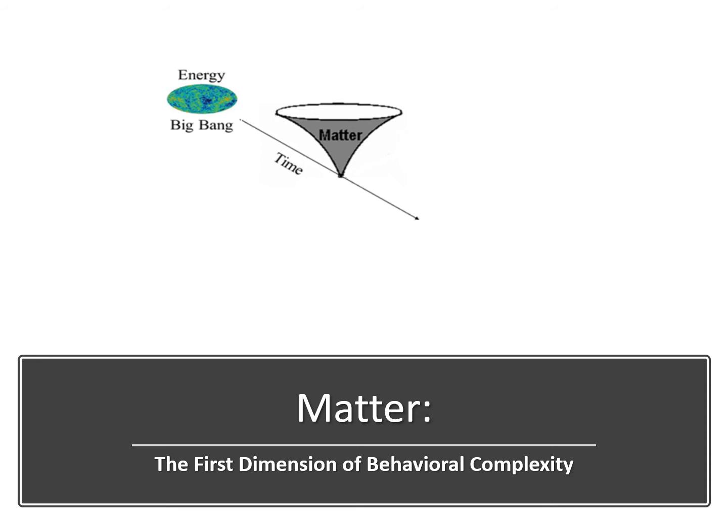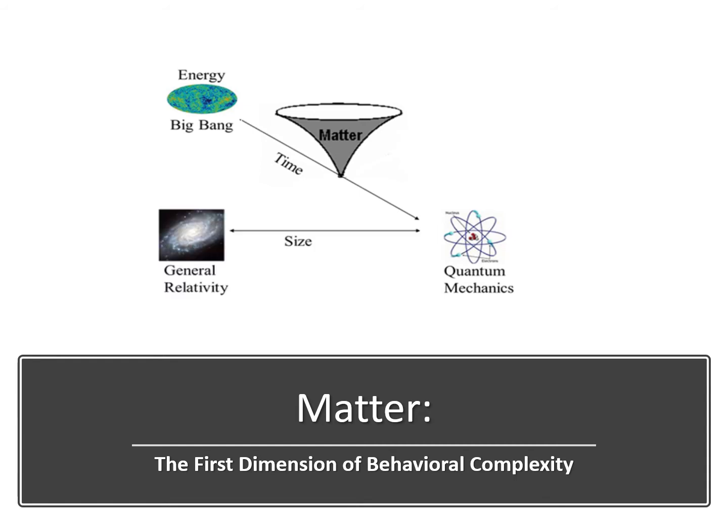In physics, matter is an entity that occupies space and has a rest mass. On the TOK, Matter with a capital M refers to the first dimension of behavioral complexity. A dimension of behavioral complexity can also be referred to as a plane of existence. As a plane of existence, matter consists of the energy-matter interactions on the dimensions of space and time. Quantum mechanics, the study of very small particles, sits at the base of matter. General relativity is Einstein's theory that maps the relationship between mass and space and time, allowing scientists to study the very large structures of the universe, like galaxies.